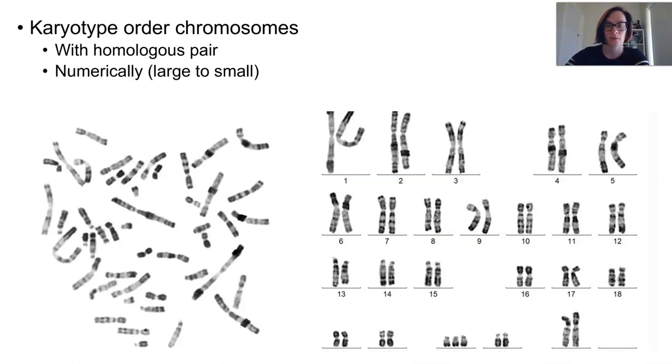Typically we go from the largest to the smallest with a few exceptions, and you're also going to see sex chromosomes in there. This way chromosomes can be analyzed to determine whether there are any abnormalities at a chromosome level.